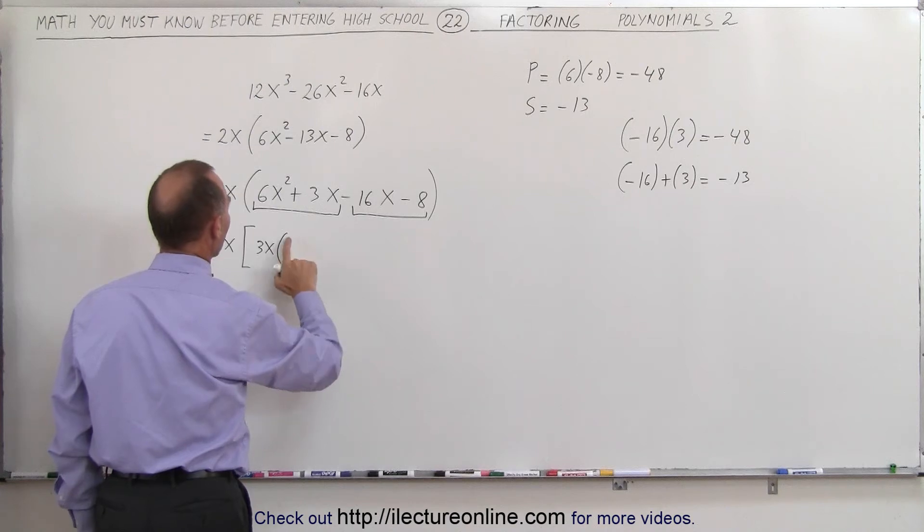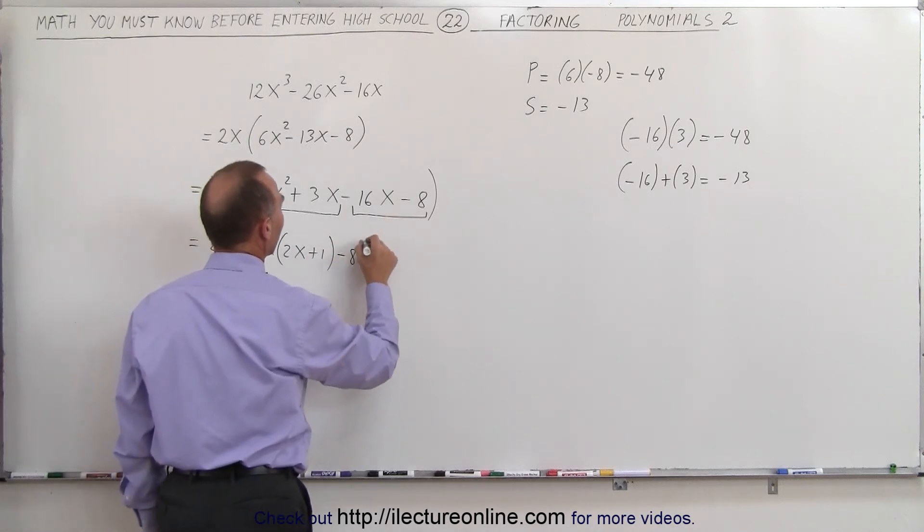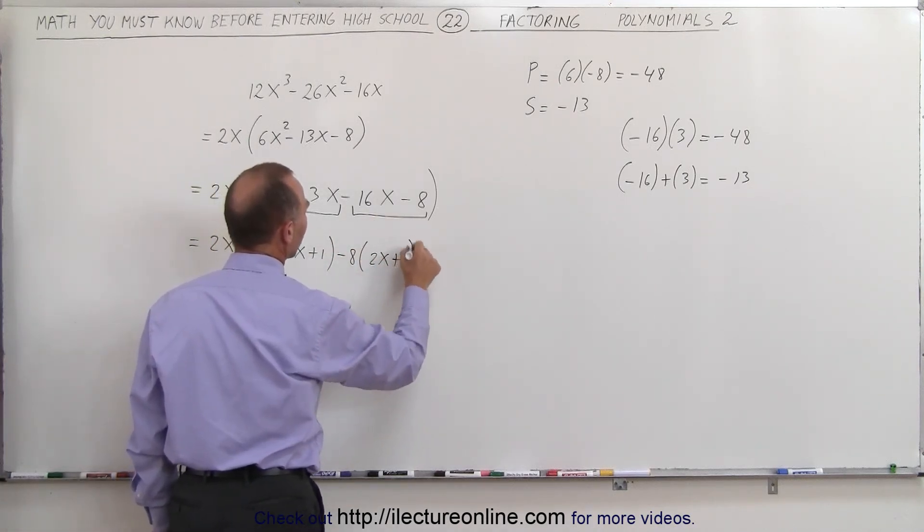I'm left with a 3, not a 3x. I'm left with a 2x plus 1. And here I can factor out a minus 8, and I'm left with a 2x plus 1.